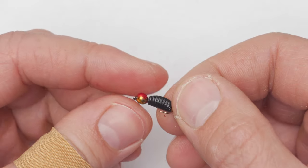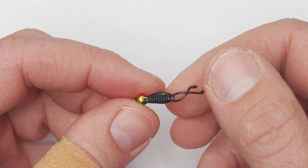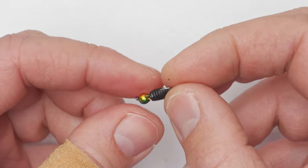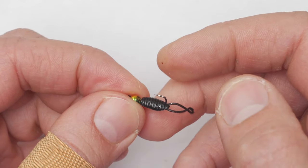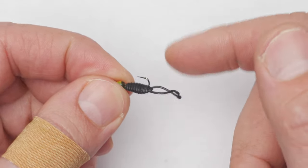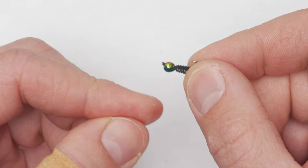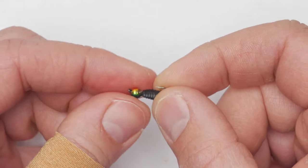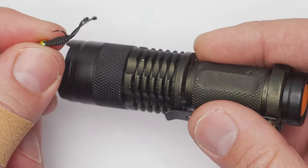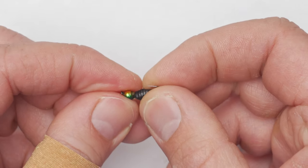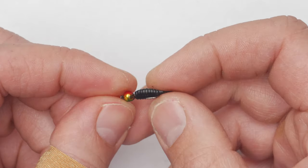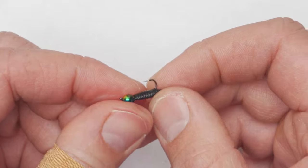Fantastic little jig head with the lure on it. I will leave links for everything you saw in the description: hooks, tungsten beads, soft lures, glue, UV torch, and so on. I hope this video will be useful for you guys. Thanks for watching and see you in the next one.